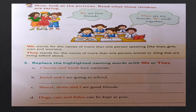Now look at the pictures and read what these children are saying. We are best friends. They are my friends. We study together. We stands for the names of more than one person speaking — like boys, girls, men, women. They stands for the names of more than one person, animal, or thing being talked about. We and they are plural forms.